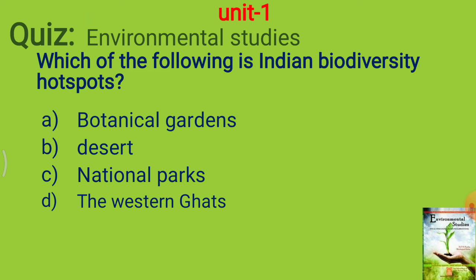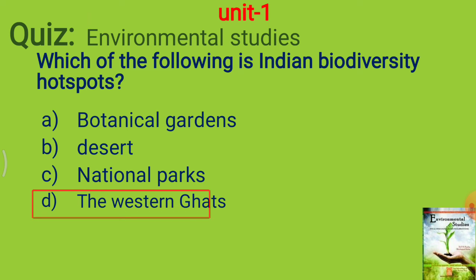Which of the following is an Indian biodiversity hotspot? Options are botanical gardens, desert national parks, or the Western Ghats. The answer is the Western Ghats.